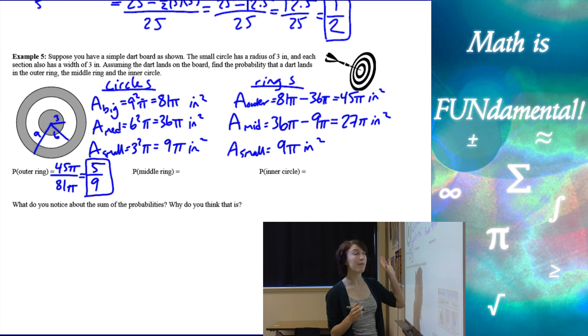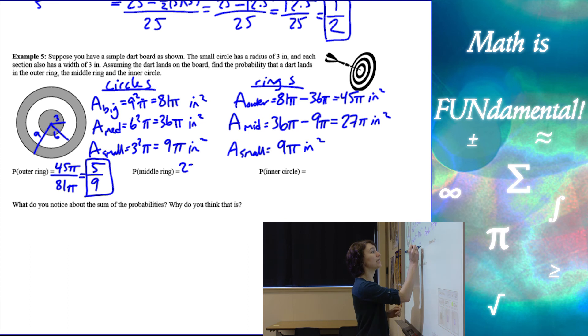Alright, now the probability of getting it on the middle ring is going to be the area of the middle ring, 27 pi inches squared, over, again, the total area, 81 pi inches squared. And simplifying that, we end up with 3 9ths.